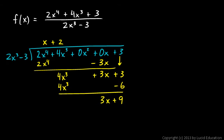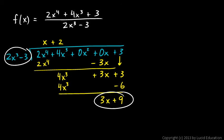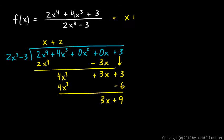When you do division like this, this is your remainder. Remember that the remainder is really the numerator of a fraction, and the divisor is the denominator. So our answer from doing this division is x plus 2 plus the remainder over the divisor. Written out: f(x) equals x plus 2 plus 3x plus 9 over 2x cubed minus 3.